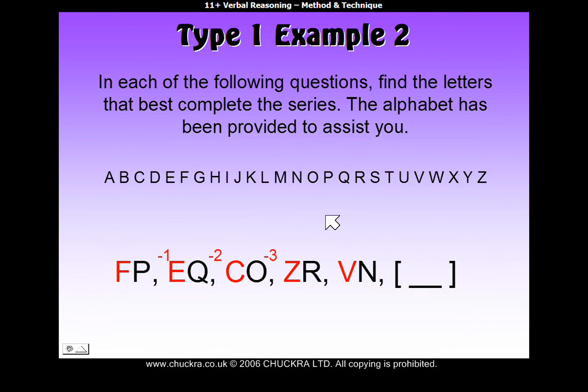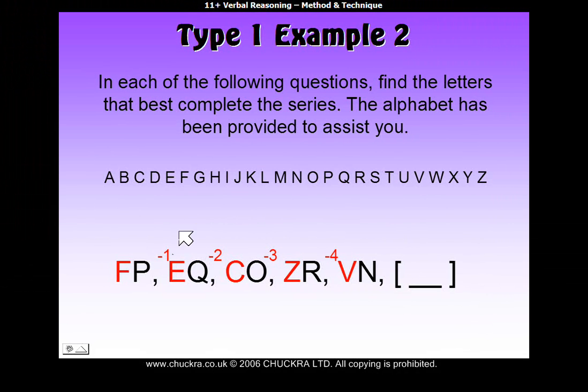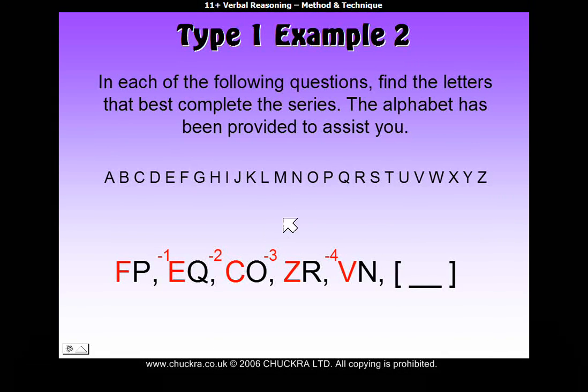Then, from Z to V, we go backwards again. One, two, three, four. Backwards four. So, as you can see, our pattern is minus one, minus two, minus three, minus four.